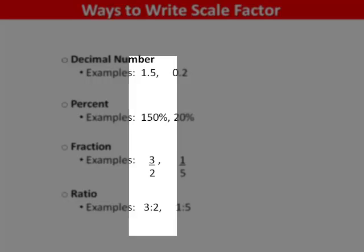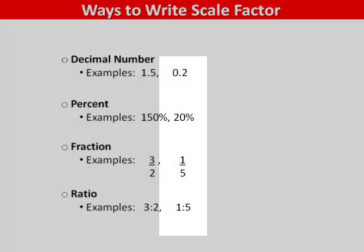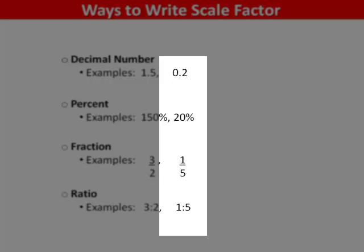One decimal five, one hundred fifty percent, three over two, and a ratio of three to two all mean the same thing. Similarly, point two, twenty percent, one-fifth, and one to five are all equivalent.